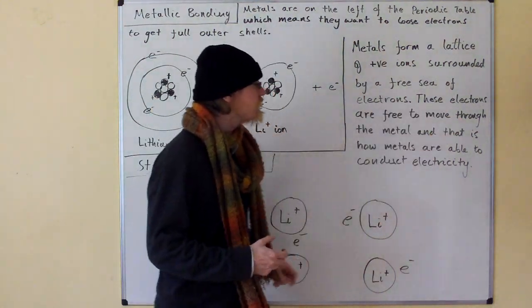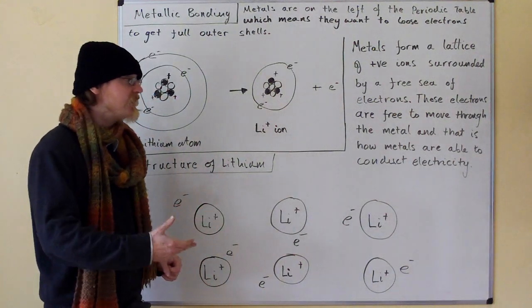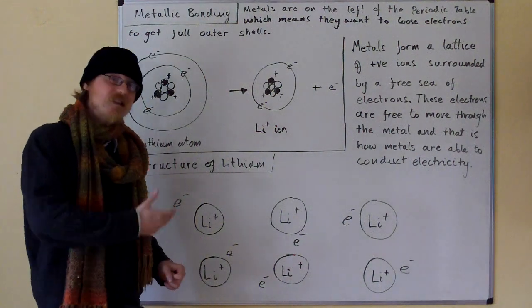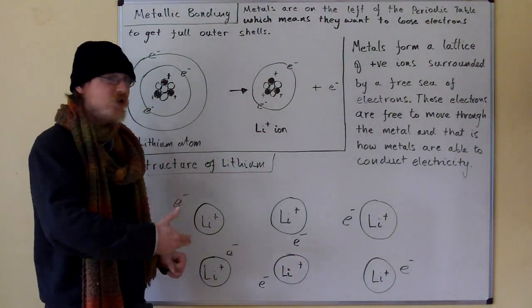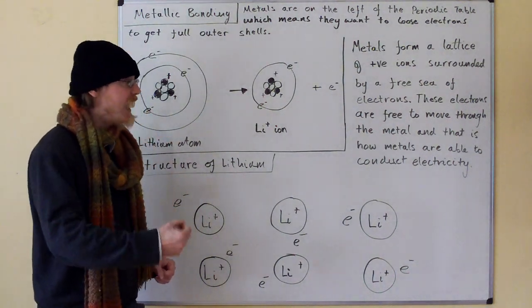But these electrons are free to move through the metal, and this is how metals are able to conduct electricity. So once again, metals form a lattice of positive ions surrounded by a free sea of electrons.